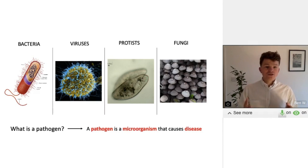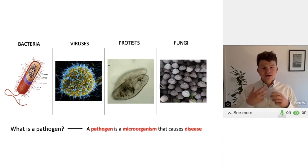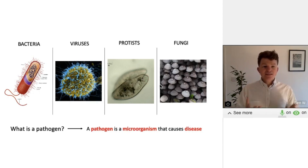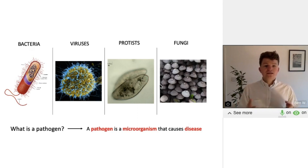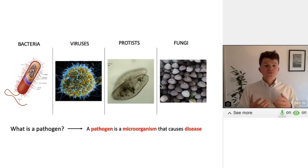Viruses are also pathogens. Now these aren't cells like bacteria — they're little particles — but they can still infect a host and they still replicate inside them. Viruses can be things like the common cold or flu, which are transmitted by airborne droplets — little droplets of water in the air. But it can also be things like HIV, which is transmitted by sexual contact.